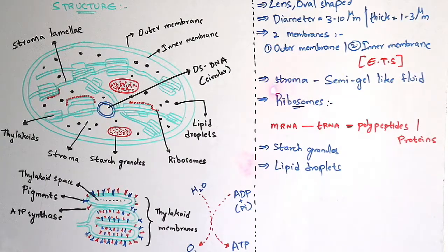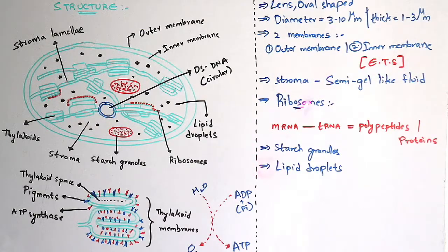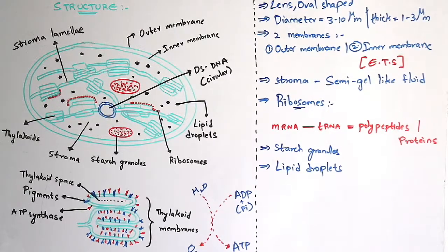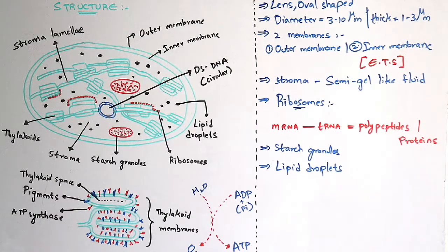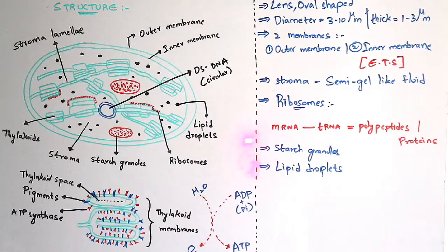Next, it consists of stroma. The empty space which is mainly present within the chloroplast is known as stroma, and this stroma is a semi-gel-like fluid. It also consists of ribosomes. Ribosomes consist of RNA, and RNA is of three types: mRNA (messenger RNA), tRNA (transfer RNA), and rRNA (ribosomal RNA). These ribosomes are mainly responsible for binding mRNA with tRNA, and they mainly form polypeptides and proteins.